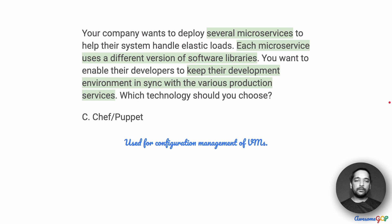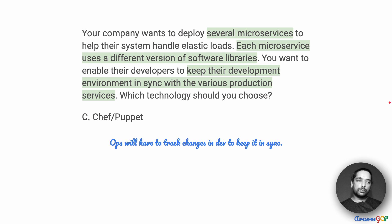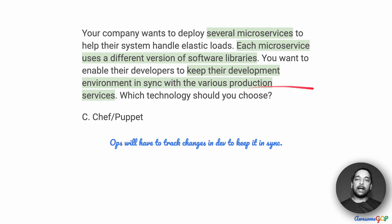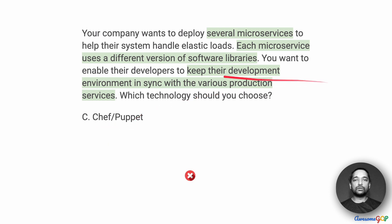How about Chef or Puppet? Chef and Puppet are used for configuration management of VMs. This has the same problem as with the RPM and Deb option. A developer could have used one version of a package via RPM or Deb, and another developer could have used a different version. Chef and Puppet allow you to quickly install and configure environments on VMs, but this still requires us to know what that environment is. If the developer has a slightly different environment, the ops team in production has to know what has changed and include that in the Chef code or Puppet configuration. So option C still does not suit the requirement to keep the development environment in sync with the production services.